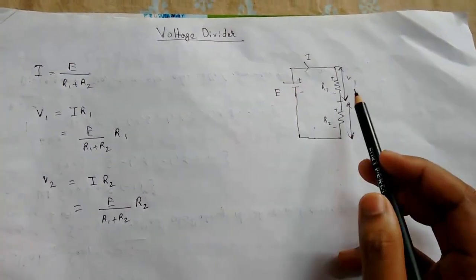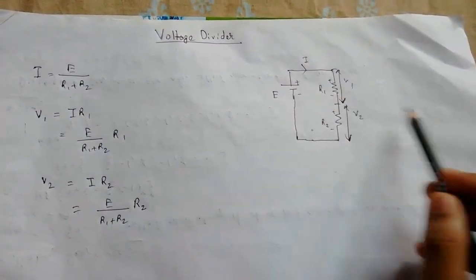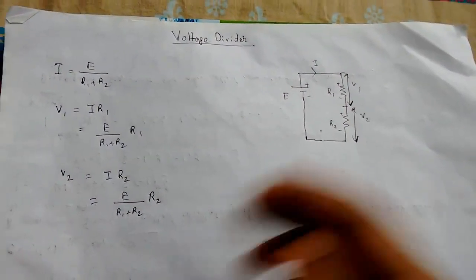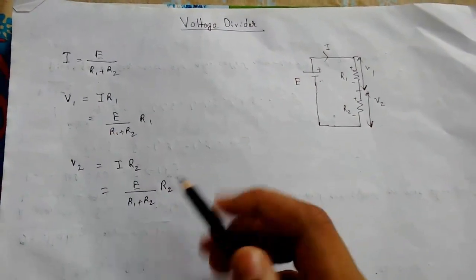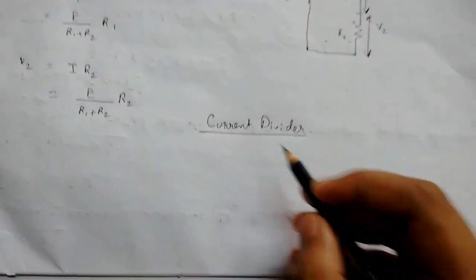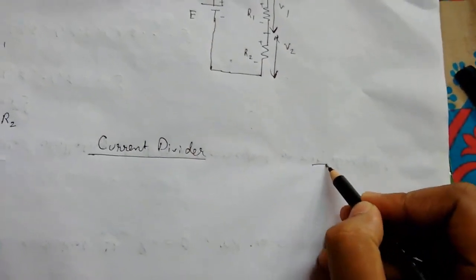So these are the voltage divider rule. Now we will see the current divider rule. Current divider rule works for resistances in parallel.